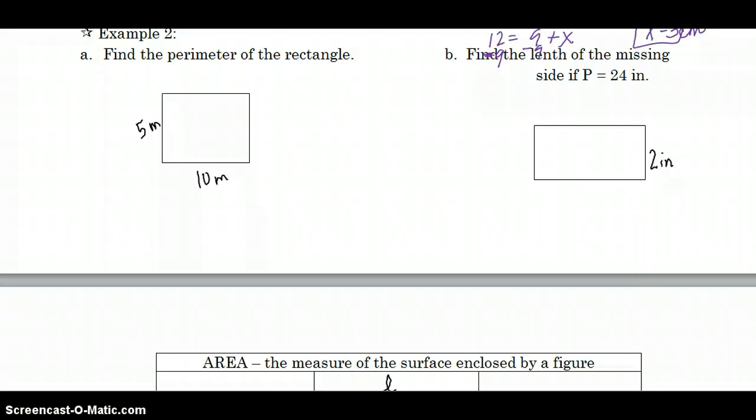In Example 2, we're looking for the perimeter of a rectangle. Remember that formula: twice the width plus twice the length equals the perimeter of a rectangle. So our width here is 5 meters, so 2 times 5 plus our length is 10. So I'm finding perimeter. 2 times 5 is 10 and 2 times 10 is 20. So our perimeter is going to be 30, and I always put my unit of measure at the end, so it's 30 meters for Example A.